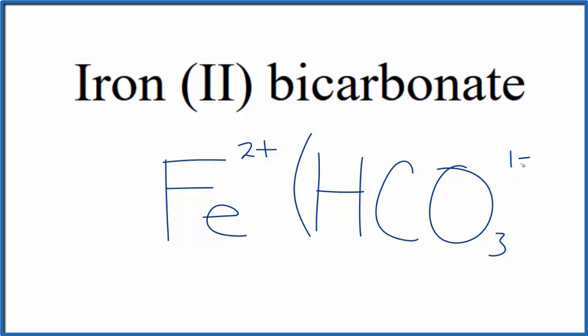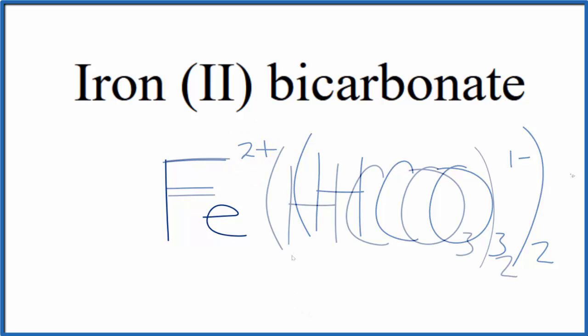If we had 2 of these hydrogen carbonate ions, these bicarbonate ions, 2 times 1- that would be 2-, which would balance the 2+. So this is the formula for iron 2 bicarbonate,